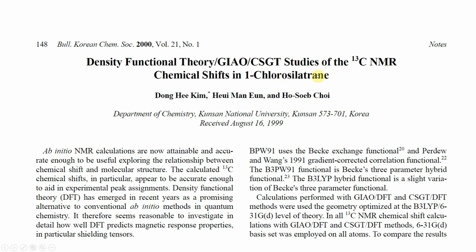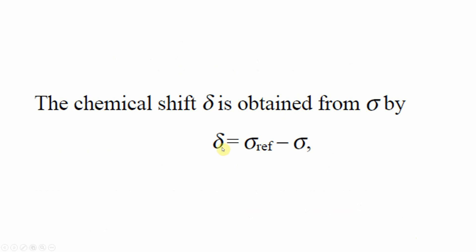We will also use these two methods to study the C13 NMR chemical shift of 1-chlorosilatrane. In this paper they first optimized the system using B3LYP/6-31G* basis set, then used the optimized geometry for NMR calculation using the GIAO and CSGT methods. Using this formula we can calculate the chemical shift: delta equals sigma_reference minus sigma_system, where delta is the chemical shift in ppm. Sigma_reference is the isotropic value of the TMS reference compound, and sigma is the isotropic value of your system.